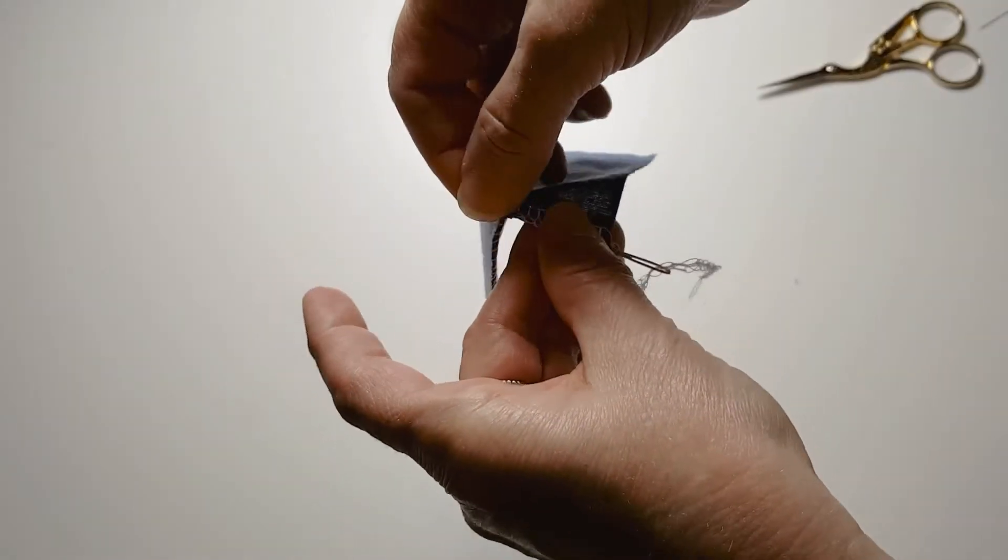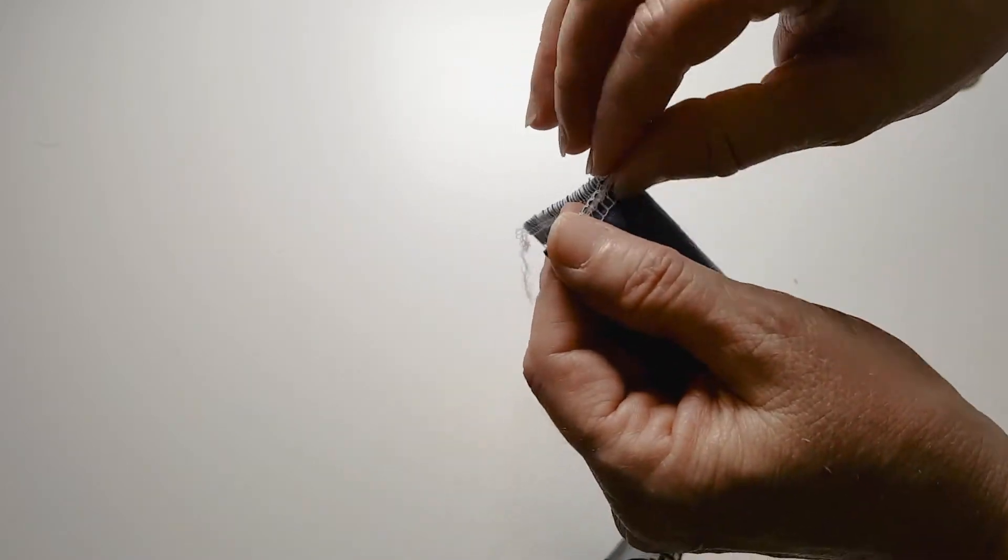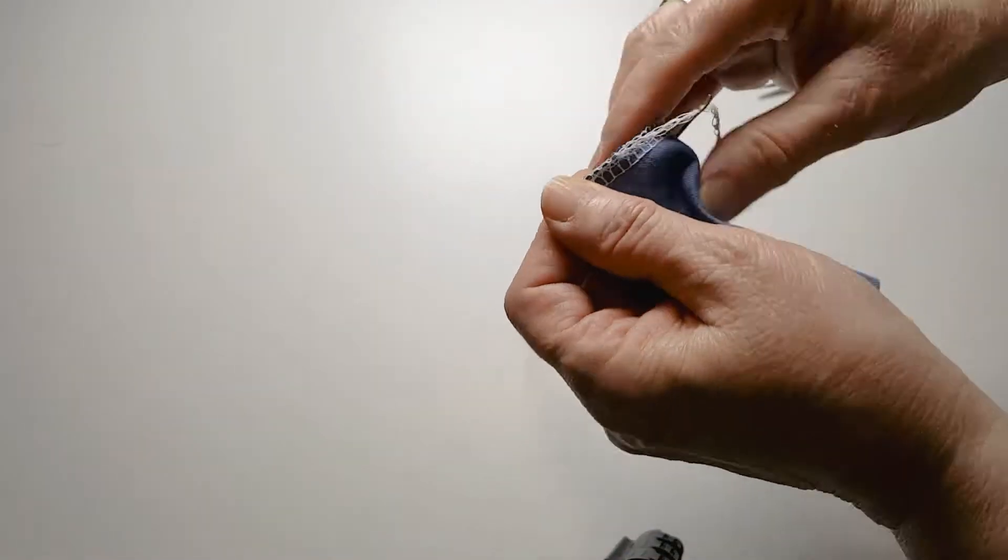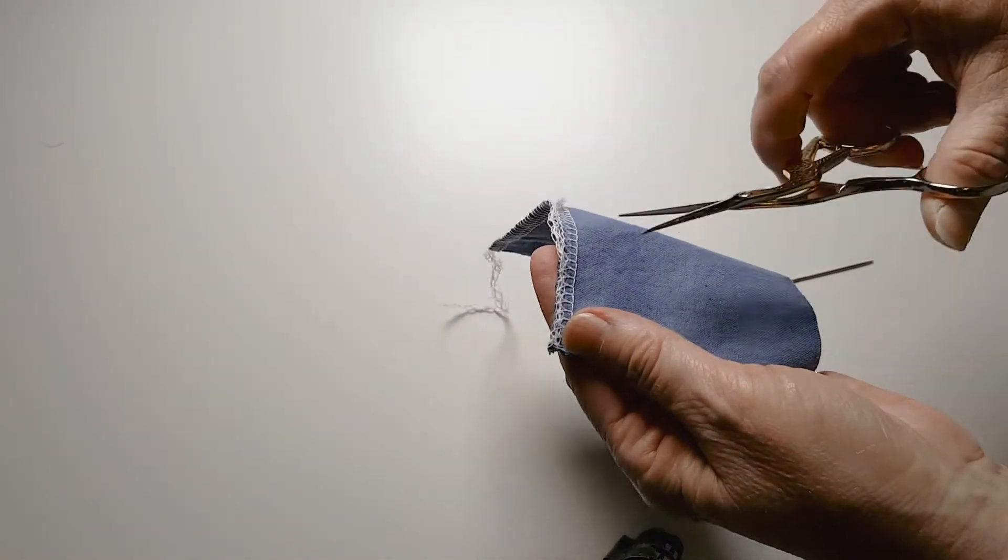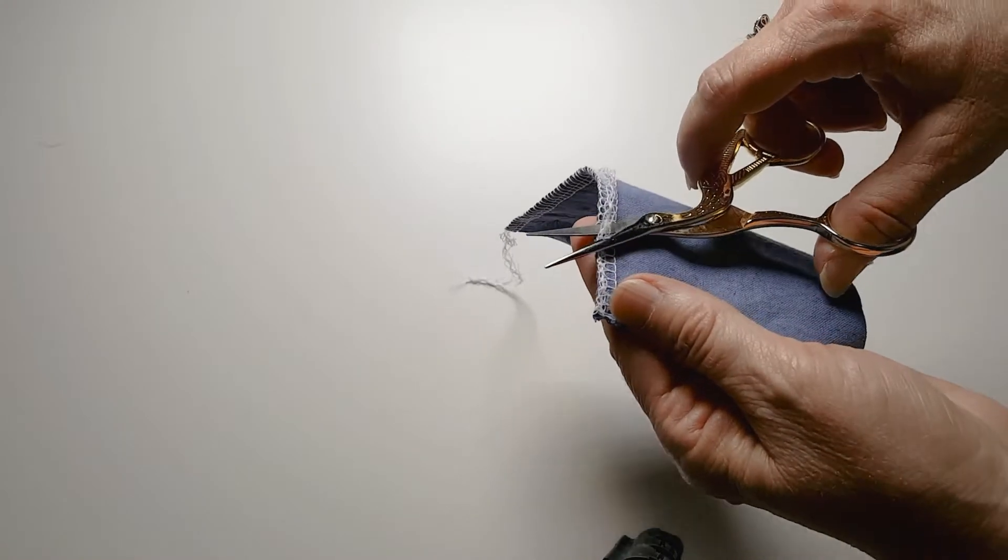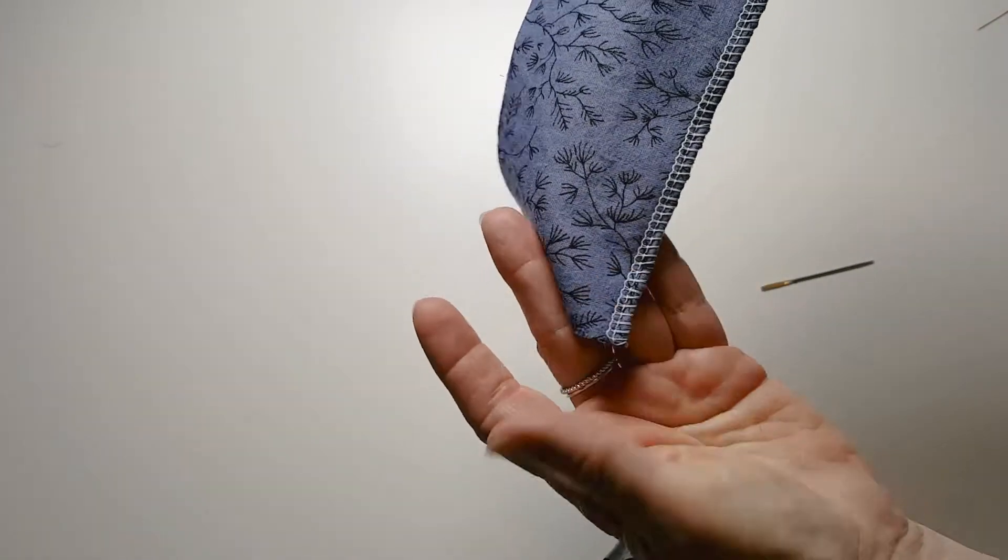Pull them through for about two and a half centimeters or so, and then the extra is simply snipped off. I would do that on both ends, and that gives a nice clean, neat finish.